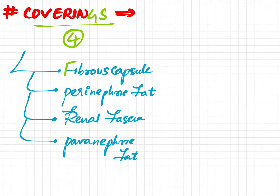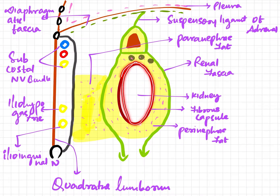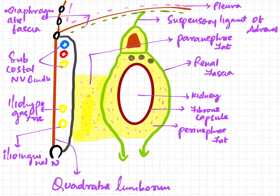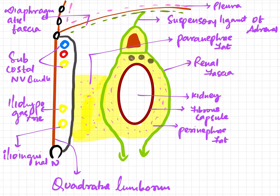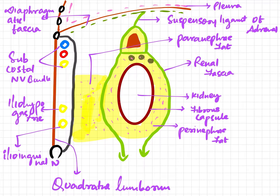Firstly, the fibrous capsule. This fibrous capsule is a dense irregular connective tissue that covers the outer surface of the kidney. In a normal kidney which is not affected, it can be easily stripped off. But in a disease condition like inflammation of the kidney, this cannot be stripped off as it is adherent to the kidney — it gets stuck to it very closely.